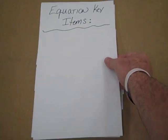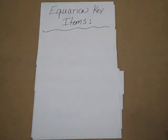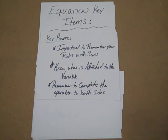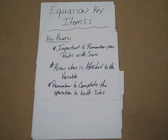Some keys for this as you go through: remember your rules with your signs, know what is attached to the variable, and remember to complete the operation to both sides. So let's try some.